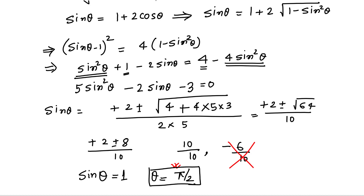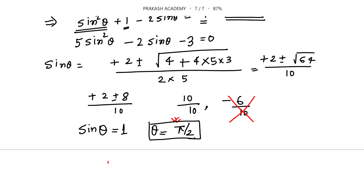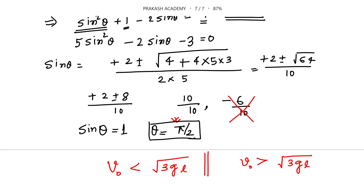Now a question for you: what will happen if the initial velocity given is less than √(3gL)? And in the second situation, what will happen if the applied velocity is greater than √(3gL)? Discuss both cases in the comments and I will see you in the next video. I hope you liked this video — please share and subscribe to my channel. Thank you so much!